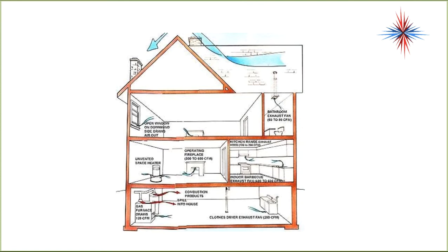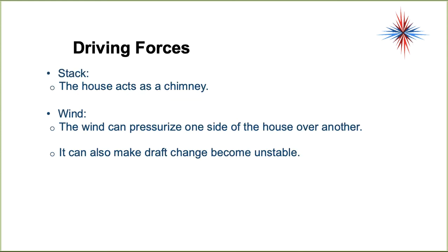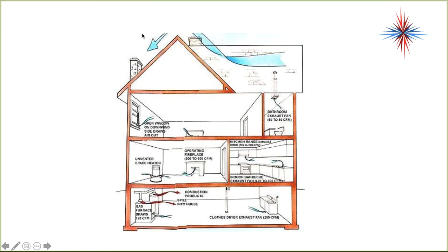Now let's talk about pressure across houses. There are several driving pressures across houses. The stack effect — the house acts as a chimney: hot air rises, cold air falls. Wind can pressurize one side of a house over another and make draft change become unstable. Wind blowing across a roof can blow down a chimney and cause furnaces to vent in reverse. On the windward side of a house, wind pushes into openings; on the leeward side, it actually creates negative pressure. Wind on the outside of a building can cause real issues inside.